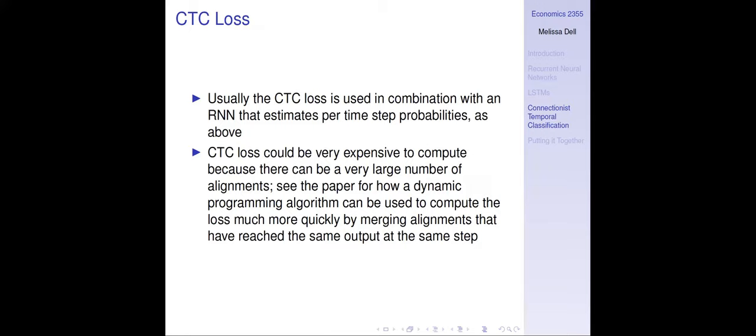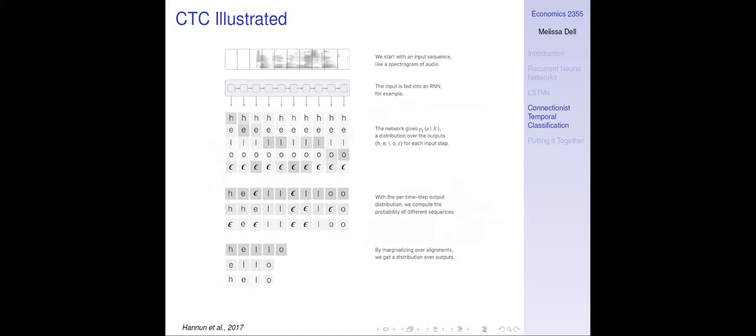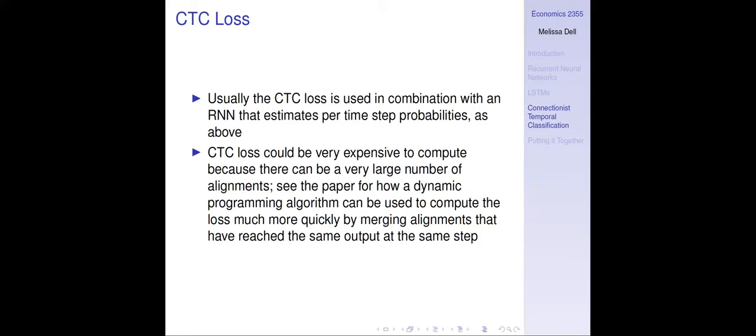Computing this loss could be very expensive given the large number of alignments. The CTC paper on Distill explains how they use a dynamic programming algorithm to compute the loss much more quickly by merging alignments that have reached the same output at the same step. That paper is a great reference if you want to understand how this is done in practice.